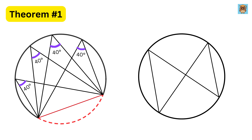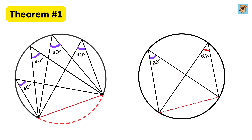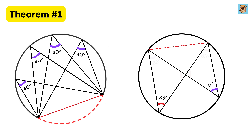Here is a question. If this angle is 65 degrees and this angle is 35 degrees, then what will be the value of all of the remaining angles? This angle is 65 degrees, so this angle will also be equal to 65 degrees, because angles subtended by the same arc are always equal. Similarly, if this angle is 35 degrees, then this will also be equal to 35 degrees, following the same theorem.